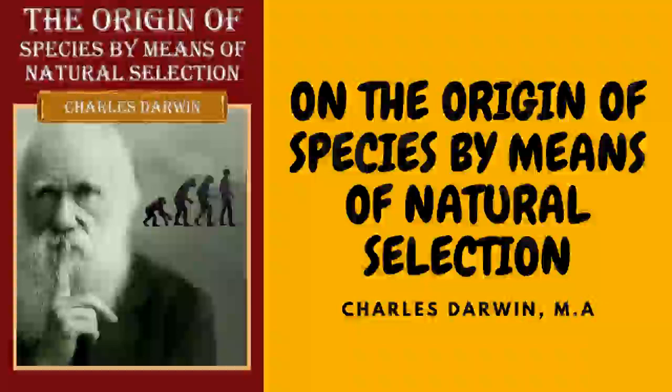On the Origin of Species by Means of Natural Selection by Charles Darwin. Chapter 1: Variation Under Domestication. Causes of variability, effects of habit, correlation of growth, inheritance, character of domestic varieties, difficulty of distinguishing between varieties and species, origin of domestic varieties from one or more species, domestic pigeons, their differences and origin, principle of selection anciently followed, its effects, methodical and unconscious selection.